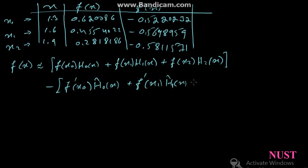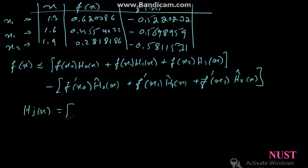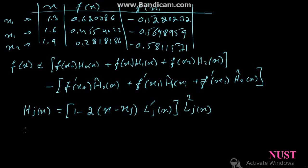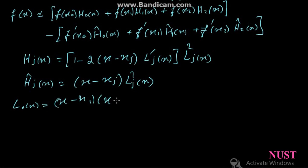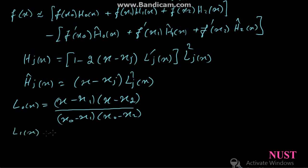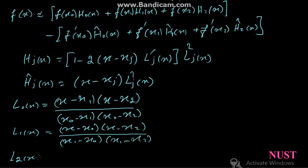Remember the formula for Hermite interpolation, which can be written as: H_j of x — h for Hermite, l for Lagrangian — f of x equals 1 minus 2 times (x minus x_j) times l'_j squared of x, and h-hat_j of x equals (x minus x_j) times l_j squared of x. The Lagrangian equation: l0 of x equals (x minus x1)(x minus x2) divided by (x0 minus x1)(x0 minus x2), and similarly for l1 and l2.